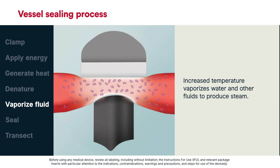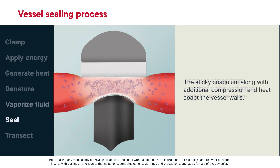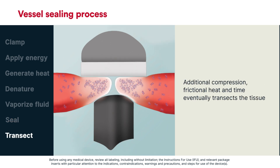The increased temperature vaporizes water and other tissue fluids to produce steam. The denatured proteins form a sticky coagulum, and along with additional compression and heat, the opposing vessel walls co-apt to form a seal. Additional compression, frictional heat, and time eventually transects the tissue.